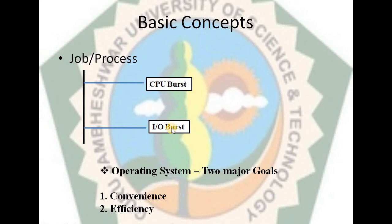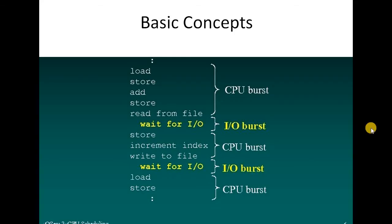and the second is input-output burst time. When a process is allocated to a CPU and it starts executing, its total execution time can be divided between these two times. Some of the time of execution is known as CPU burst time, and some is known as input-output burst time. I can show you with this example. This is a program, and when it loads into memory and starts executing, it is known as a process.